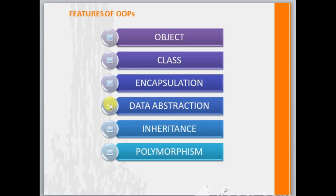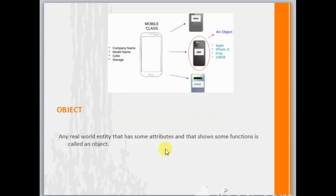Next we'll talk about the features of OOP. We'll look at what is an object, class, encapsulation, data abstraction, inheritance, and polymorphism.